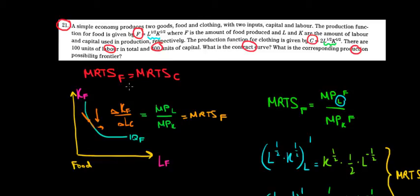In this video we'll calculate the production possibilities frontier. First we must look at the production functions. We have a Cobb-Douglas function for food and for clothing, and we can see that they use the same share in their inputs — half labor and half capital in their production.